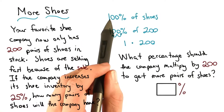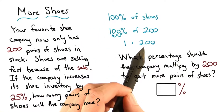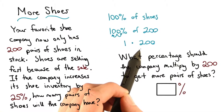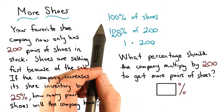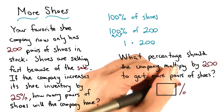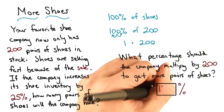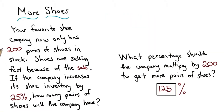We know if we use 100%, the company will keep its 200 pairs of shoes. We want to increase this number, so we need to multiply by a number bigger than 100%. They want to increase the inventory by 25%, so we should multiply by 125%. So let's actually see this problem worked out.